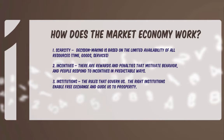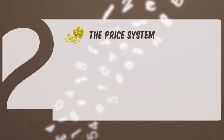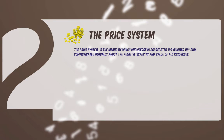The second feature of a free enterprise system is the price system. Prices are a means of resource allocation — through prices, a free enterprise system directs resources toward their highest valued use. Without free and unregulated prices, that is, prices that are set by markets and not the government, a free enterprise system does not work. The price system is the means by which knowledge is aggregated and communicated globally about the relative scarcity and value of all resources.